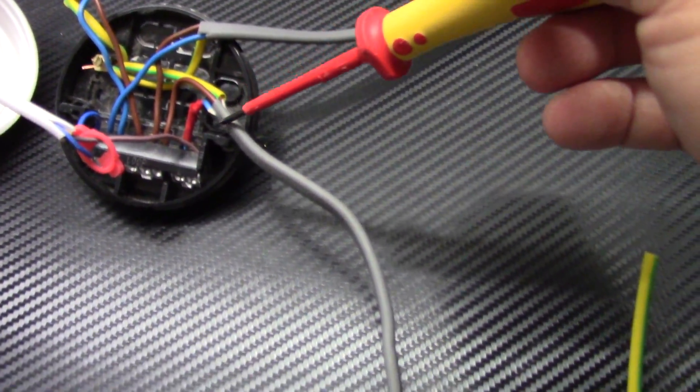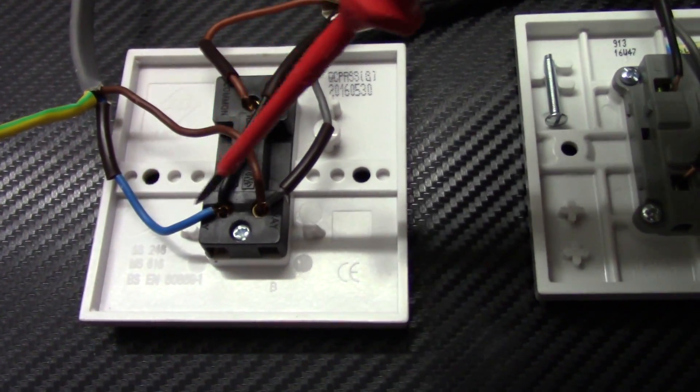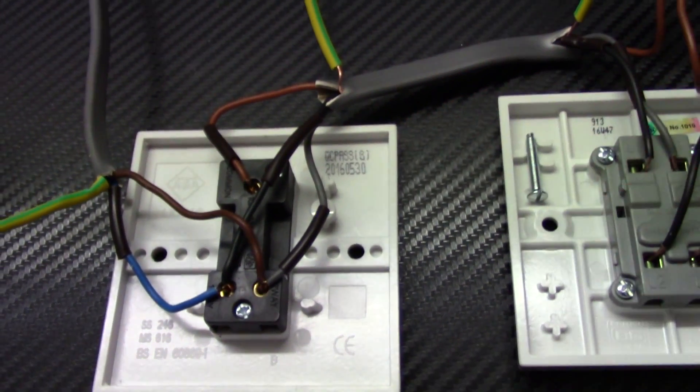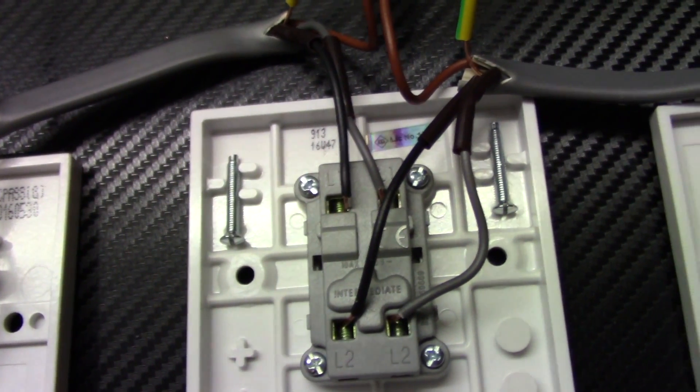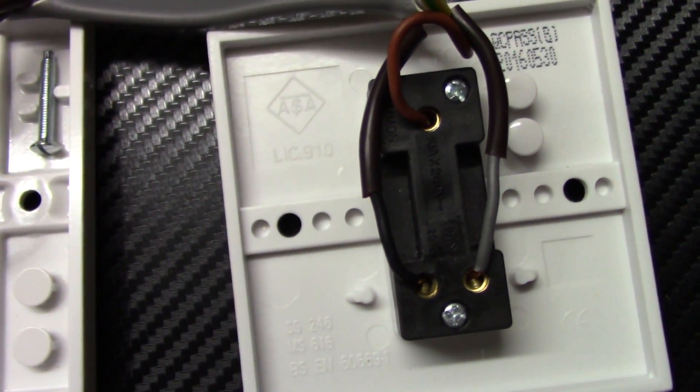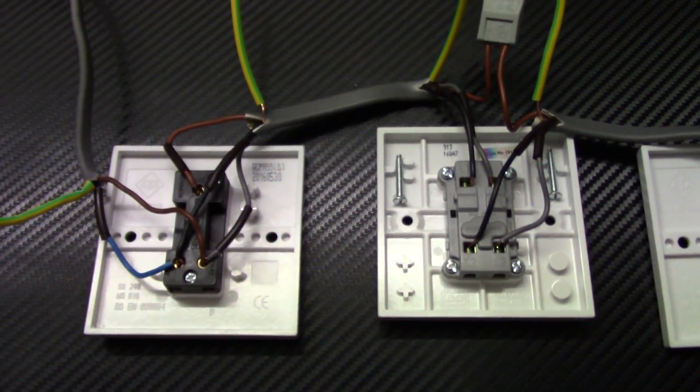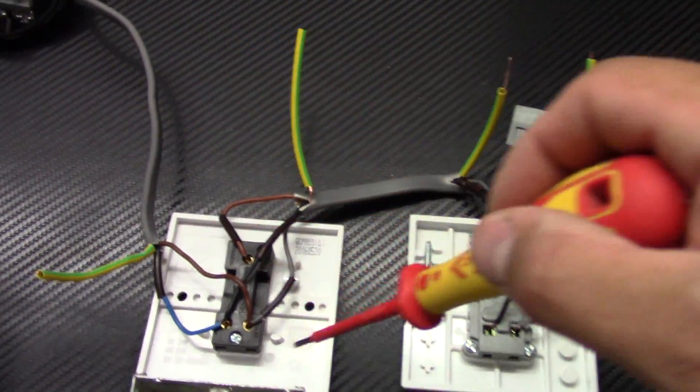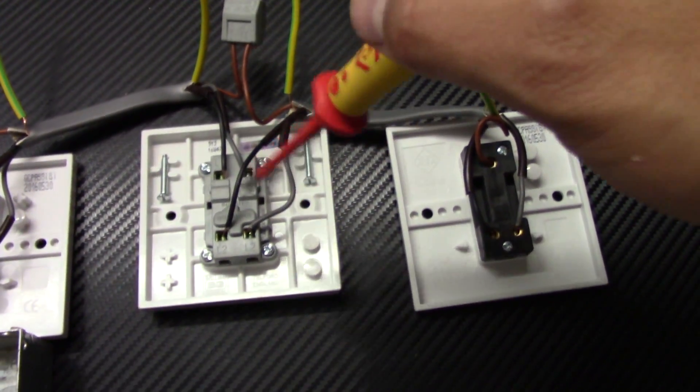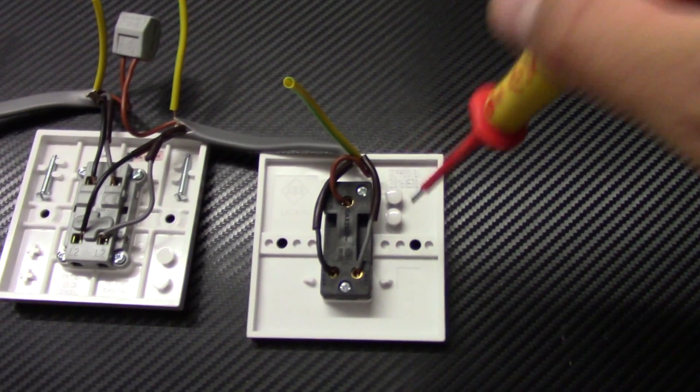So cable from the ceiling rose. Live wire to L2. Switch live to the L1. There's an earth terminal here. So we connect these two wires in one back box into earth terminal. These two wires also in the back box for the intermediate switch. And at the end we've got just one earth wire. So we connect to the back box terminal in this switch.